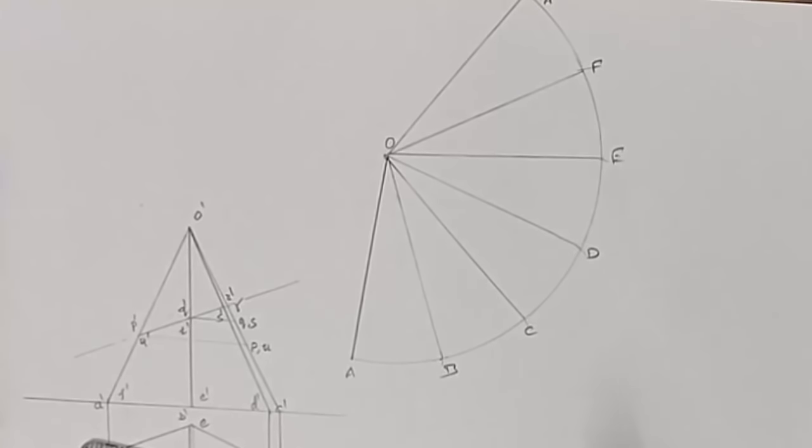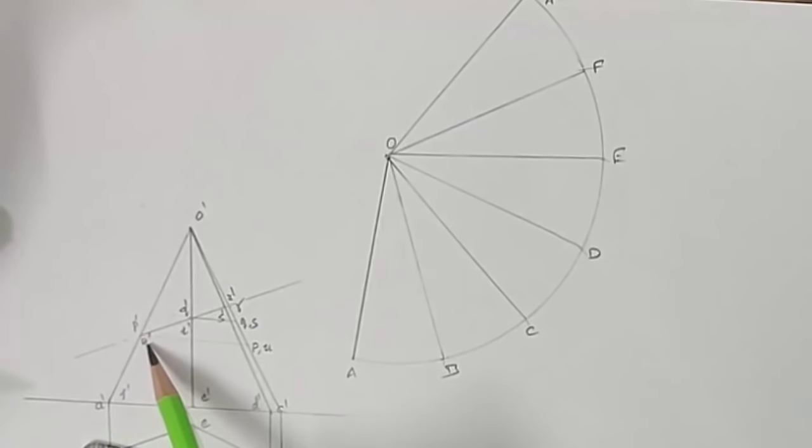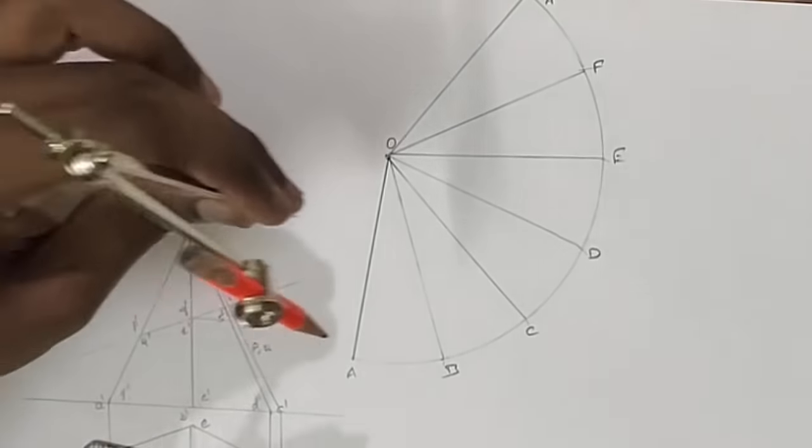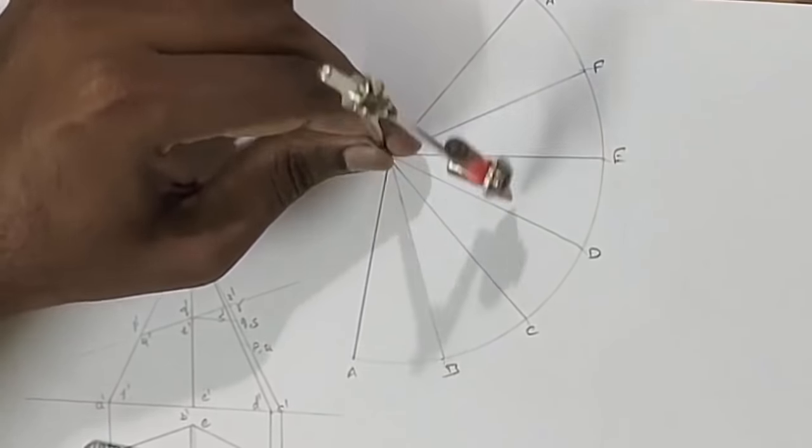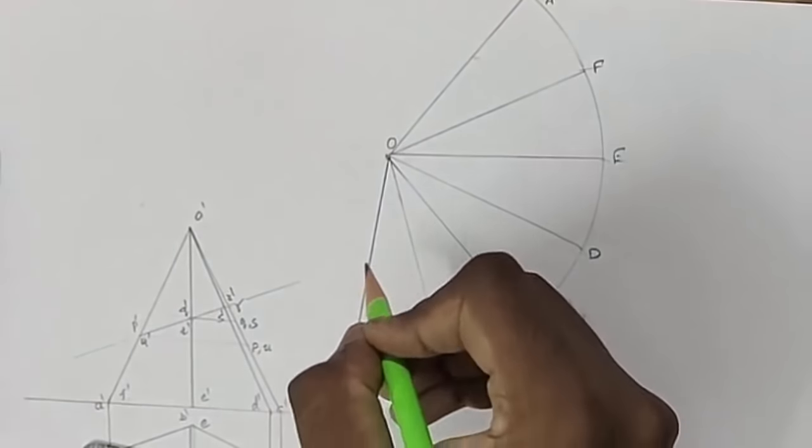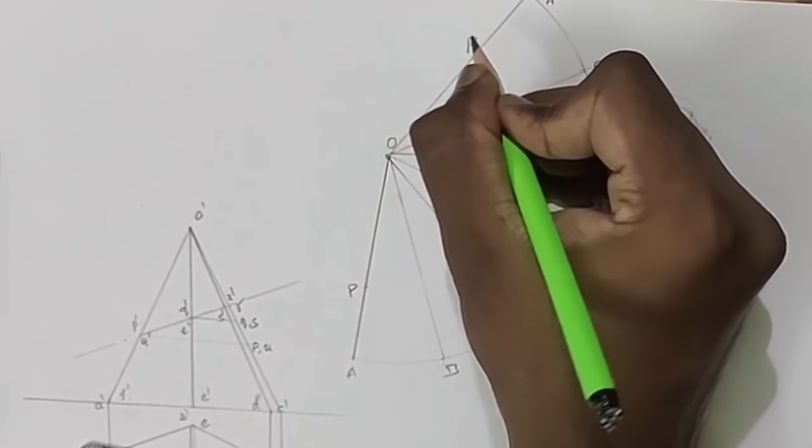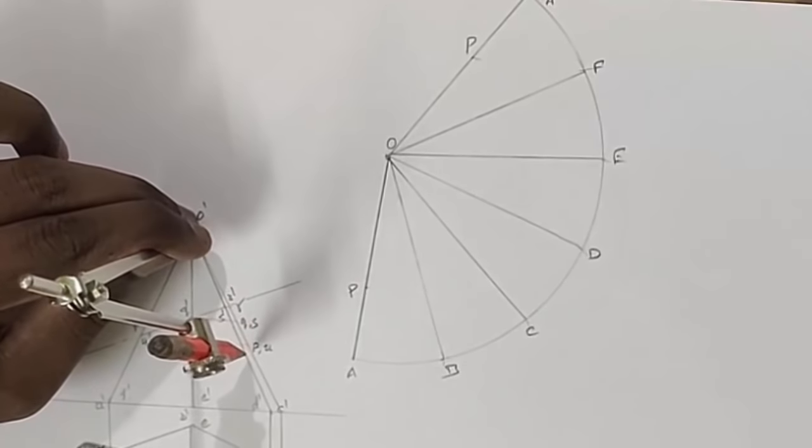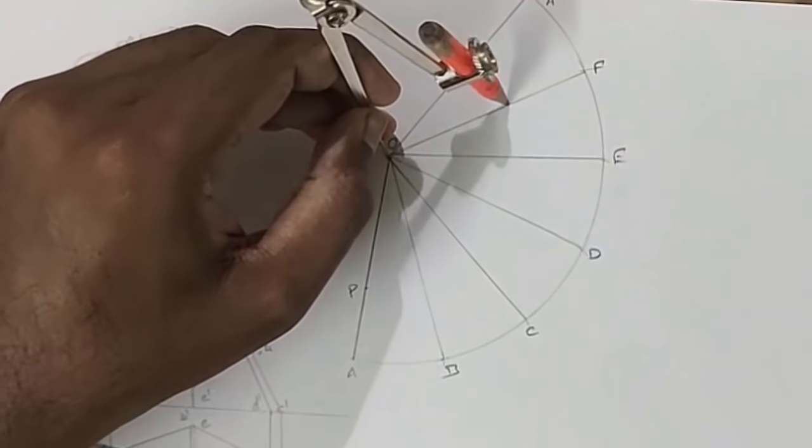Now we have to transfer all the points to the development by measuring in the true line. Let us start from point P. Point P and U are in the edge OA. Point P is in OA and point U is in OF.